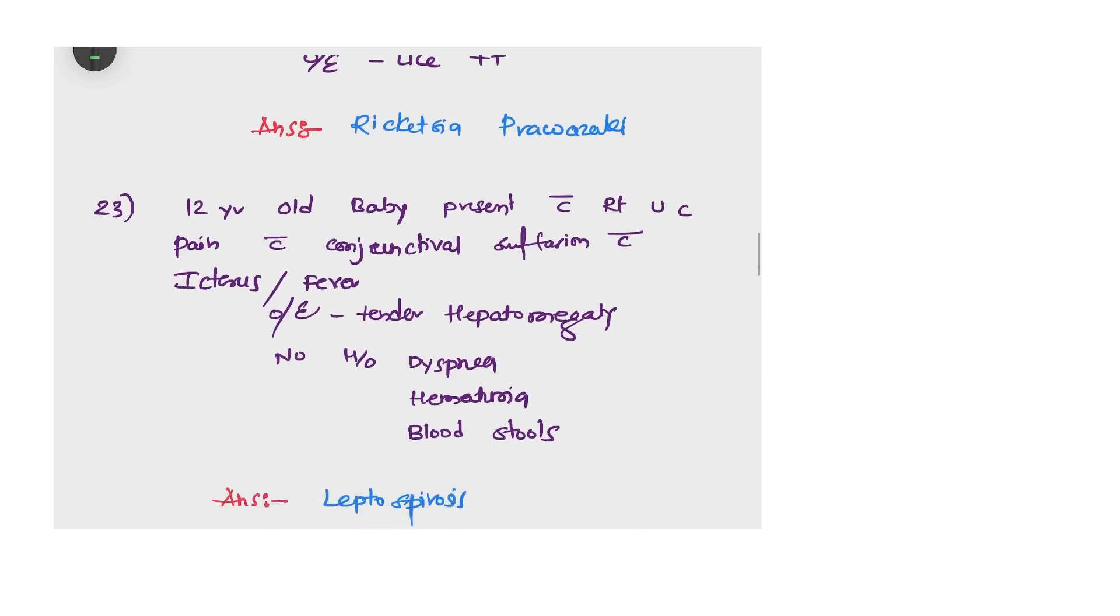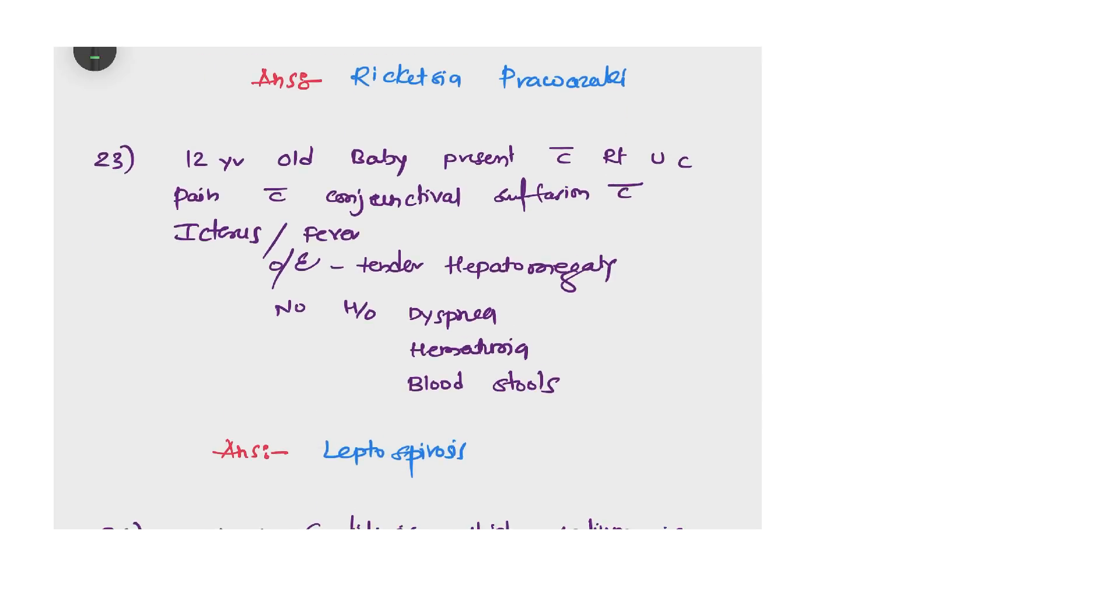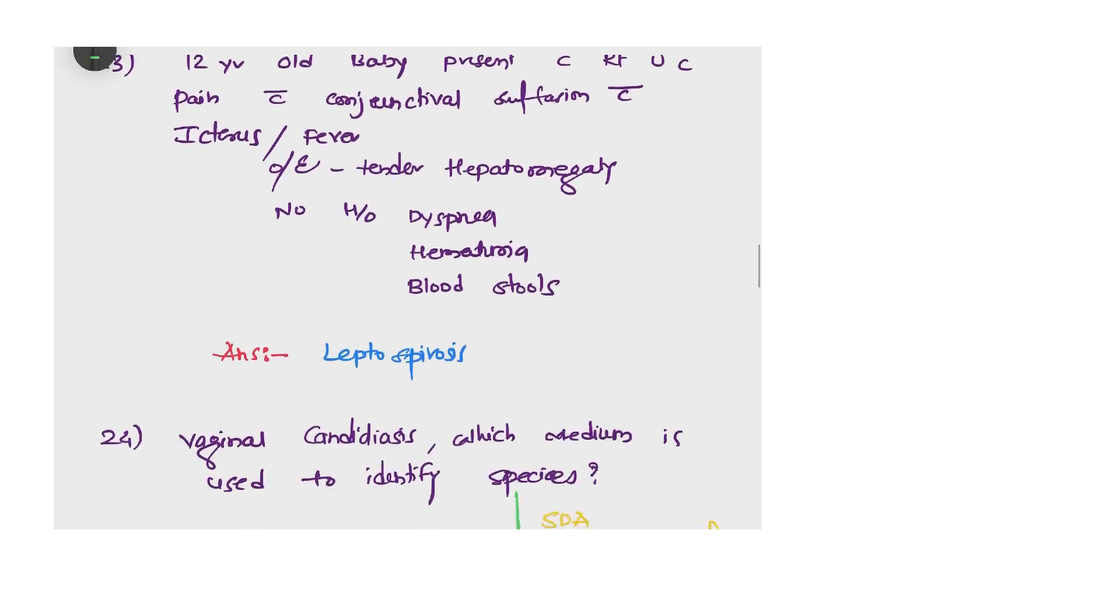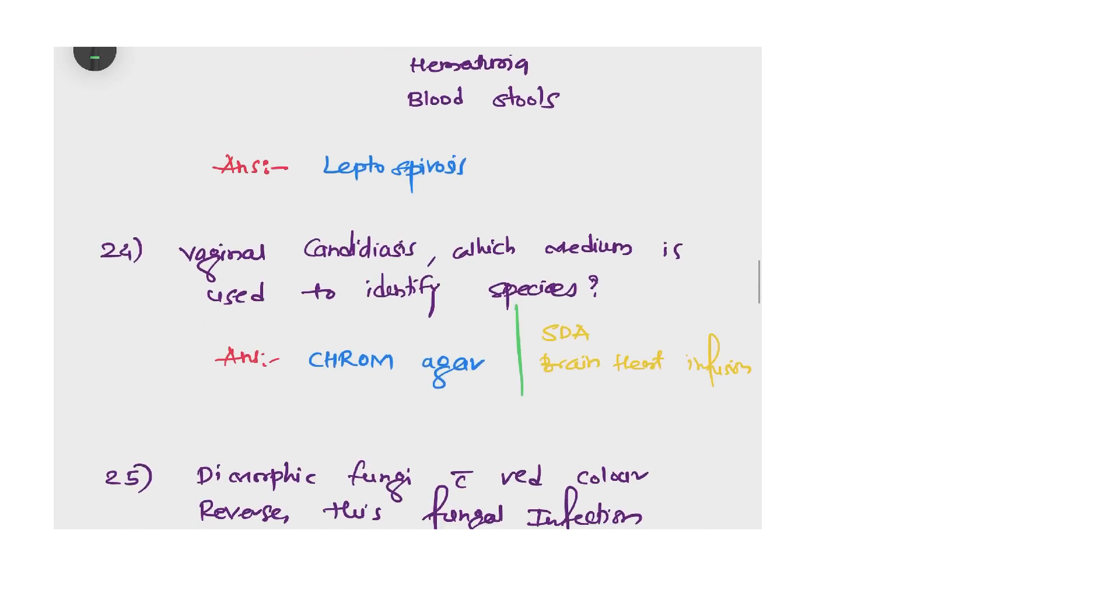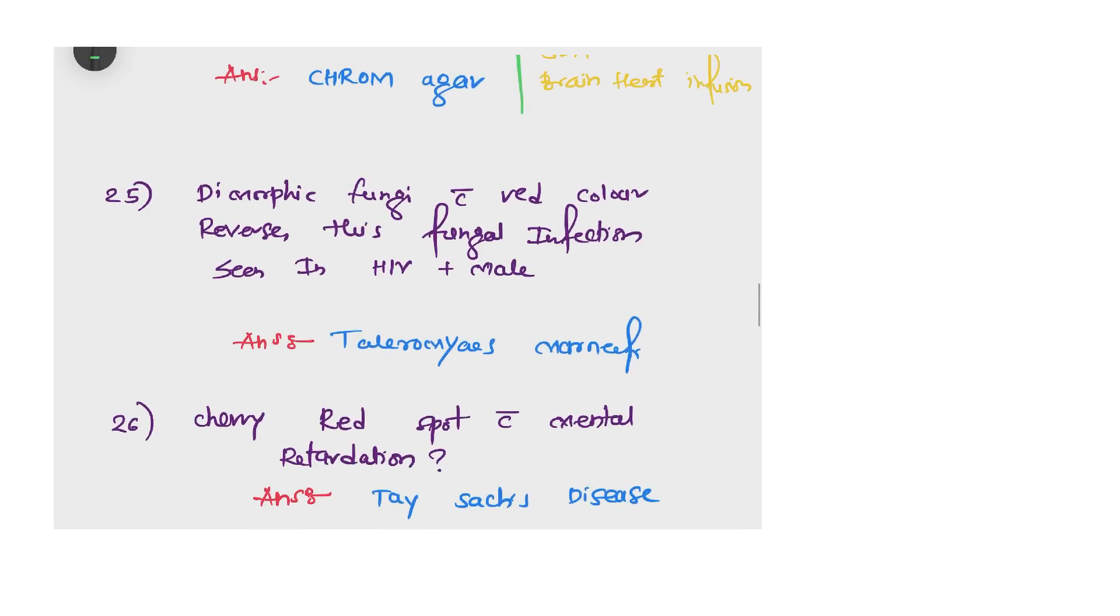Question 23: 12-year-old baby present with right upper quadrant pain with conjunctival suffusion with icterus and fever. On examination, tender hepatomegaly can be seen. There is no history of dyspnea, hematuria, or blood in stools. We have options like dengue and leptospirosis. The answer is leptospirosis. Next question: vaginal candidiasis - which medium is used to identify the species? We have options like Sabouraud dextrose agar, brain heart infusion. The answer is CHROMagar.